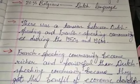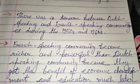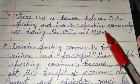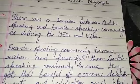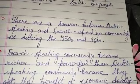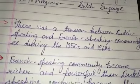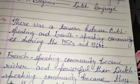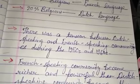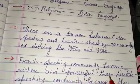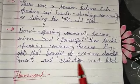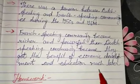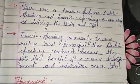There was tension between the Dutch-speaking and French-speaking communities during the 1950s and 1960s. What was the reason responsible for this tension? The reason was that the French-speaking community became richer and more powerful than the Dutch-speaking community, because the Dutch-speaking community got the benefit of economic development and education much later than the French community.